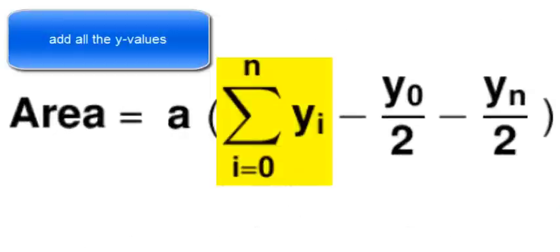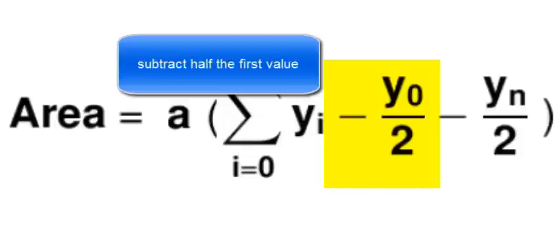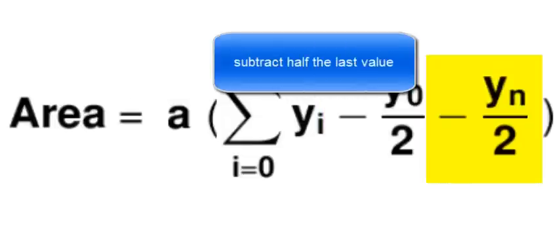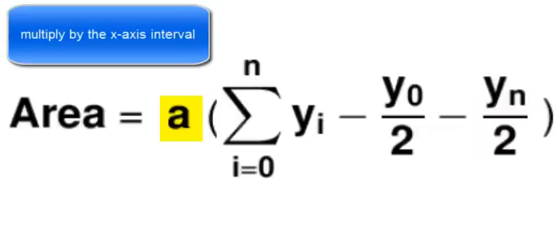One more time. Add all the Y values. Subtract half the first value. Subtract half the last value. Multiply by the X-axis interval.